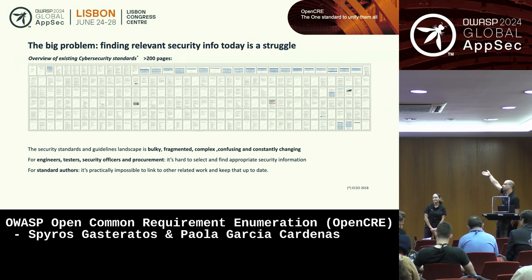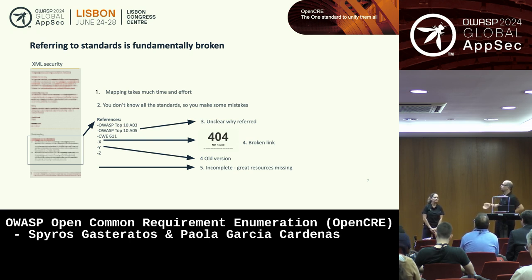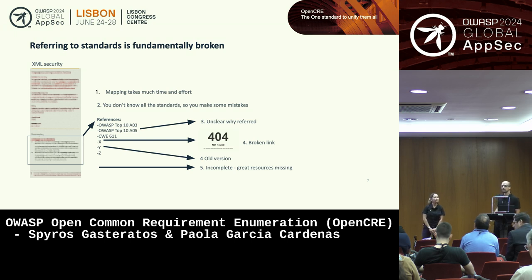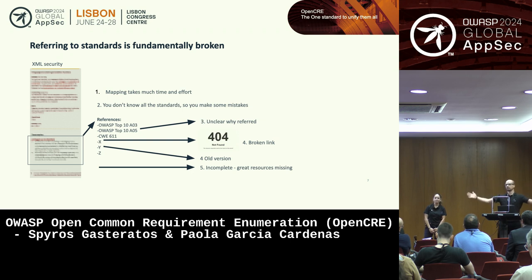This proves that the guidelines landscape is both bulky and fragmented, and it's not user-friendly or meant for humans. That makes the problem that referring to standards is fundamentally broken. You try to find which Top 10 to link to, but the people who read your advice have no idea what Top 10 A05 means because they're probably developers and they've heard about OWASP Top 10 — they don't know it by heart. CWE 611 is the same, and then standards change, so links break. You don't have the time to maintain all your mappings yourself, so you link to old versions, or you have no idea what is out there. You end up with incomplete advice and great resources missing.